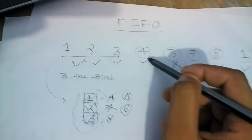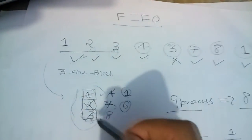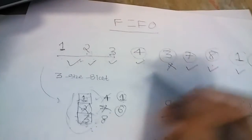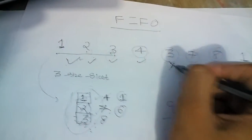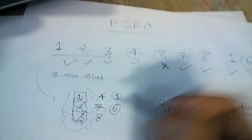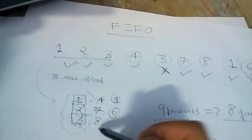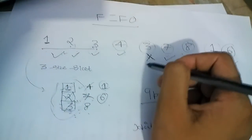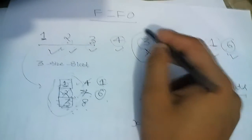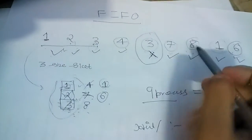Now we brought 4. There was no location for the 4 to adjust here, so we have to remove out the 1. Then we brought 3. 3 was already there, so there is no need to bring it. The process number 7 I brought here. The process number 8 I brought here. Now we brought process number 1 and the process number 6. So there is only a single hit, which is the 3, and all these were the misses.